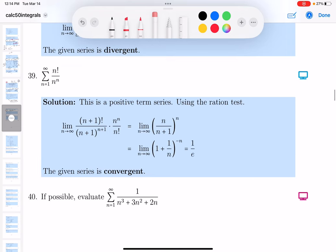Okay, so this is question number 39, and what I would do is use the ratio test. Let's look at it. It's a positive term series. Don't worry about the absolute value.